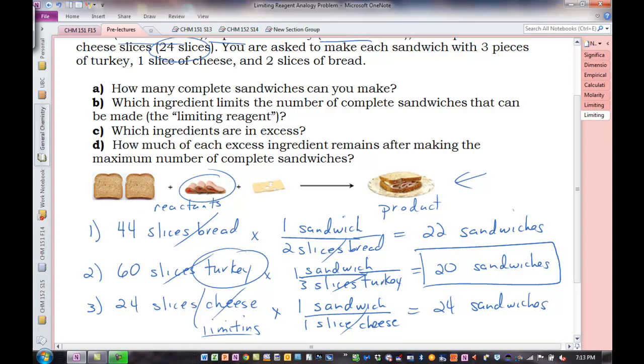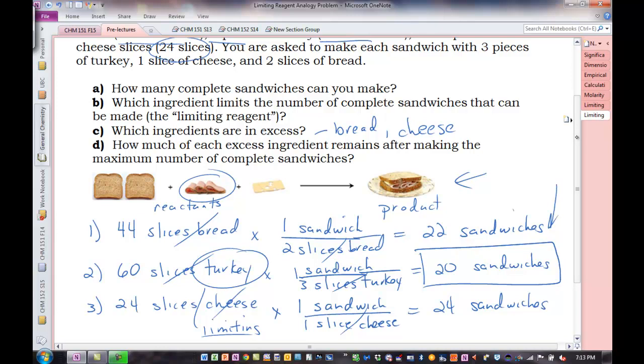So looking at the questions, probably should have read through these first. How many sandwiches can we make? Got that, 20 sandwiches. Which ingredient limits the number of complete sandwiches that we can make? The limiting reagent, that's the turkey. Part C: Which ingredients are in excess? Well, the other two in this case, since we have three reactants. Bread is in excess, and so is the cheese.